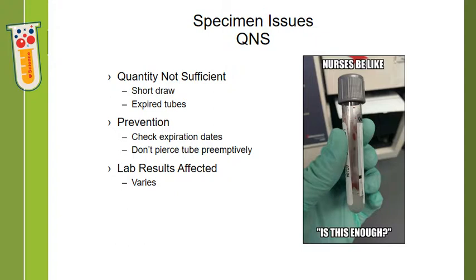QNS means quantity not sufficient — not enough sample to run the requested test. This can happen if it is a short draw or a really difficult draw. If the tubes are expired, they may not have adequate vacuum left to draw the correct amount of blood. To prevent this, always check your expiration dates on your tubes and all of your supplies. Don't pierce the top of the tube until you are ready, and don't pop the top off if you intend to use it as an evacuated tube, because it releases the vacuum. Generally you are probably not going to get results on QNS specimens and will have to call for a redraw.